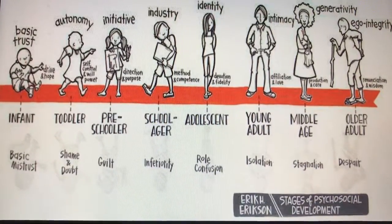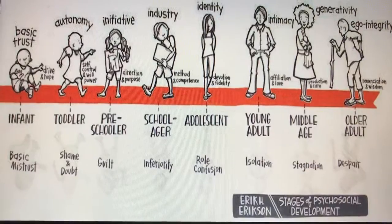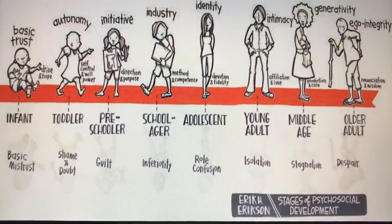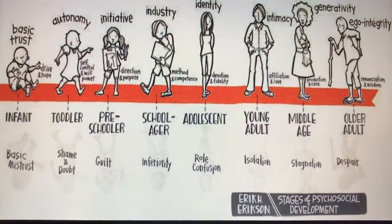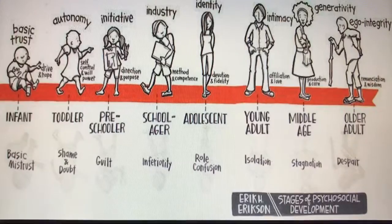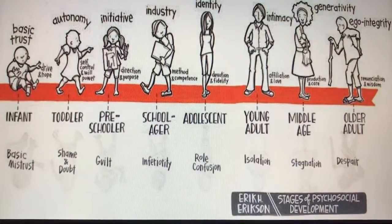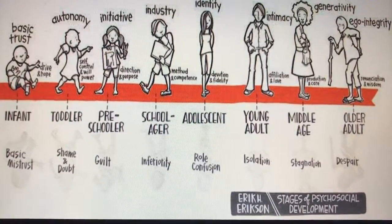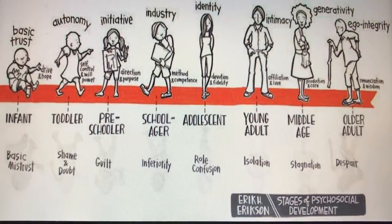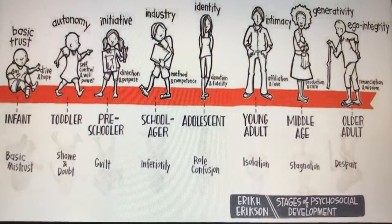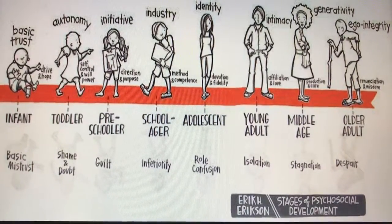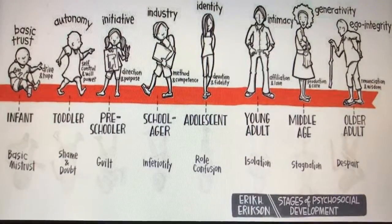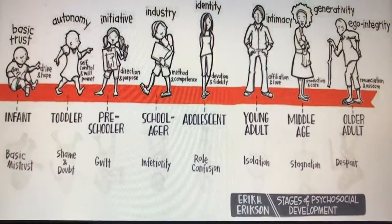The fourth stage is industry versus inferiority, which is between the ages of 7 to 12 years old, considered to be puberty. This is where a child learns to do things well or correctly in comparison to a standard or to others. It's a method and competence resolution. Their belief is: I am what I can achieve.